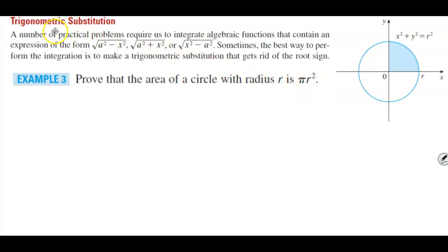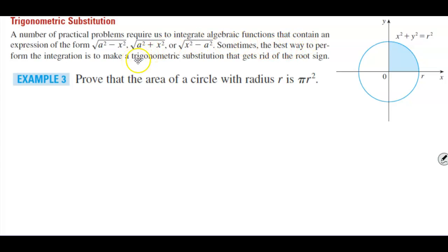We're going to use a trigonometric substitution. A number of practical problems require us to integrate algebraic functions that contain an expression of the form: square root of a²−x², square root of a²+x², or square root of x²−a². Sometimes the best way to perform the integration is to make a trigonometric substitution that gets rid of the root sign.